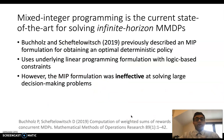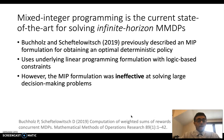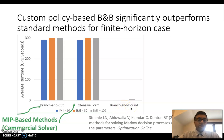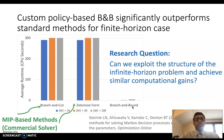Mixed integer programming, or MIP, is the current state of the art for solving these infinite horizon MMDPs. Previous research showed that an MIP formulation was really good for determining an optimal deterministic policy, using an underlying linear programming formulation with logic-based constraints. However, the MIP formulation was ultimately ineffective at solving very large decision-making problems, many of which are relevant to our current health space. So what we did in 2018 was develop a custom policy-based branch and bound that significantly outperformed standard methods for the finite horizon case. The question is: can we exploit the structure of the infinite horizon version and achieve similar computational gains?